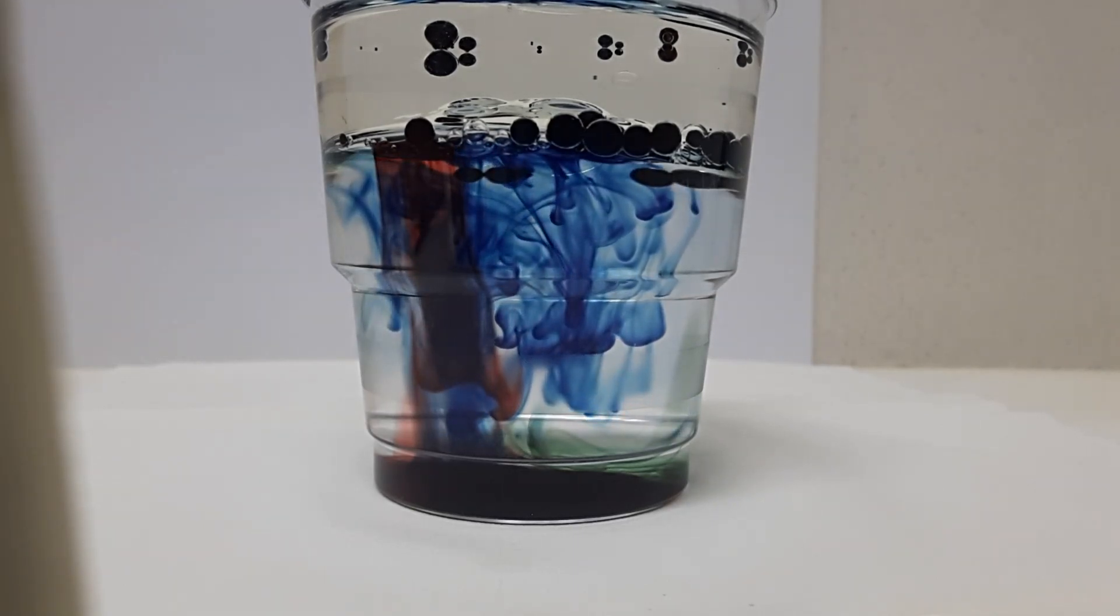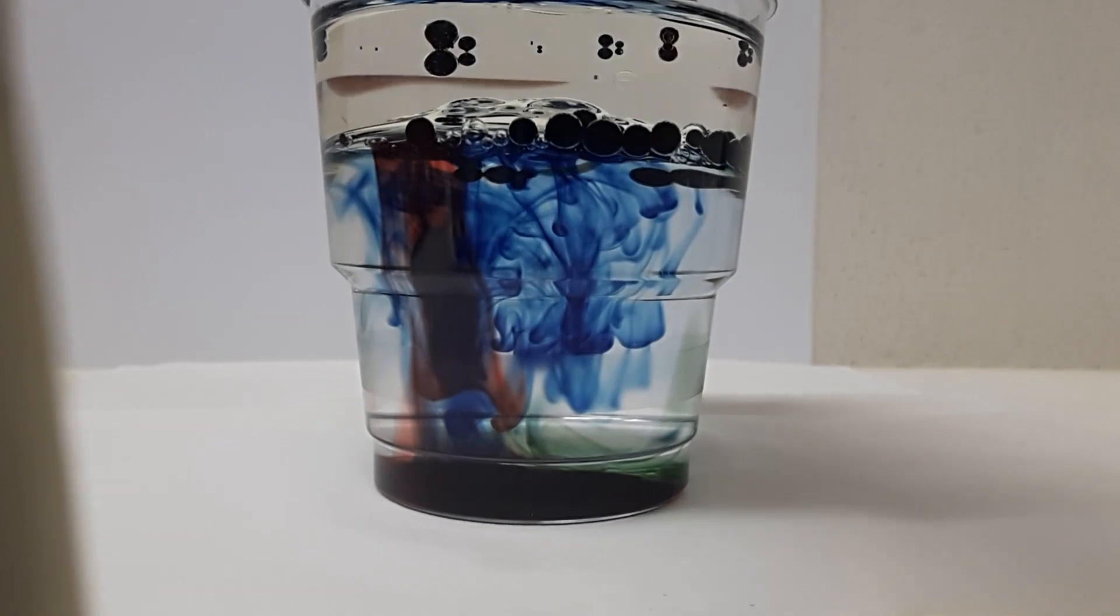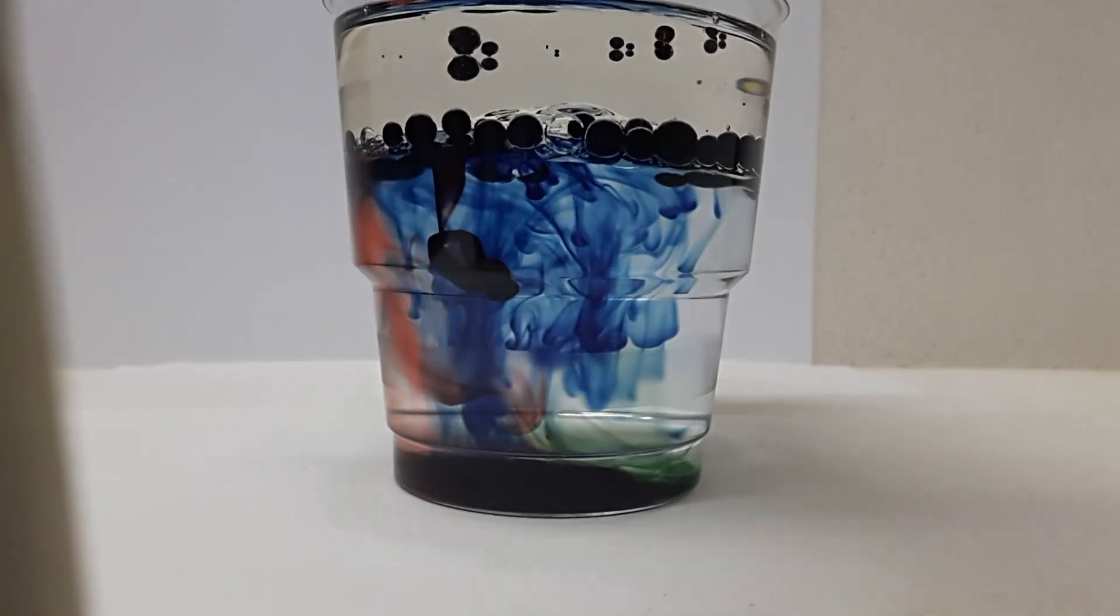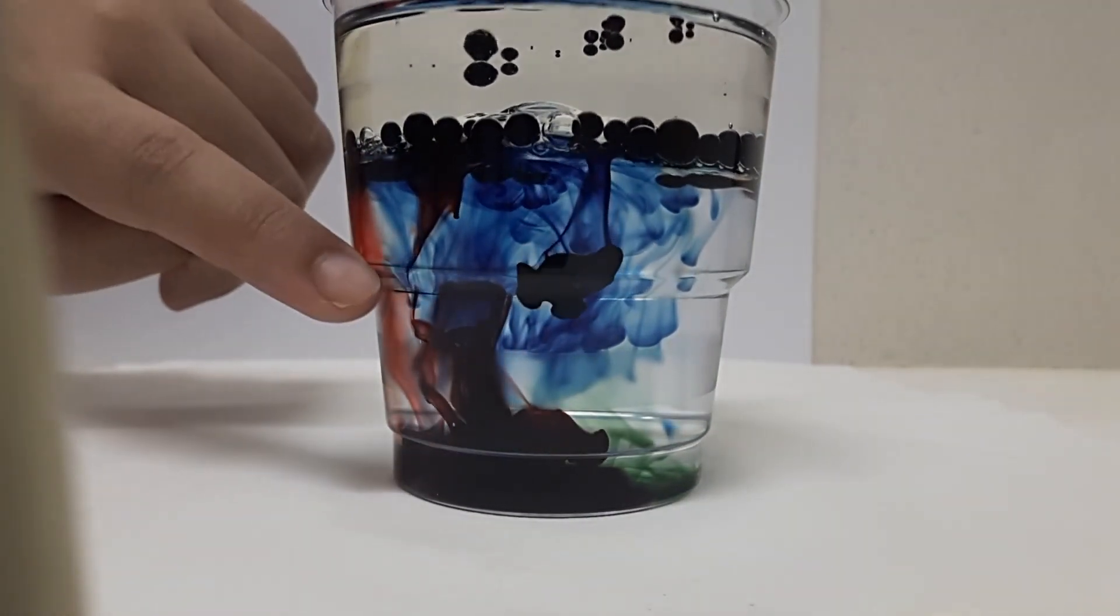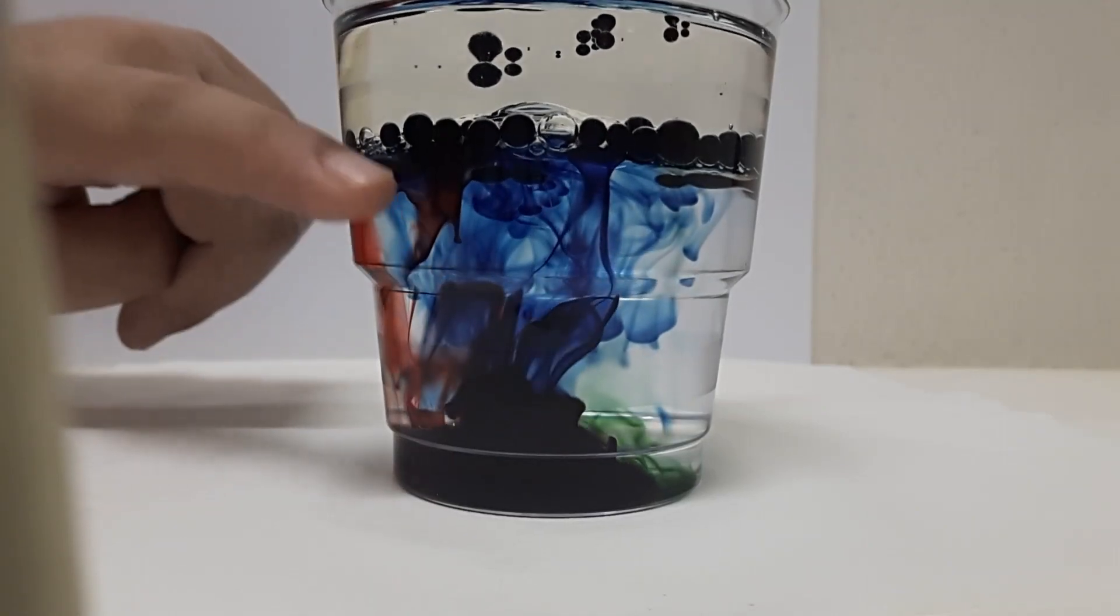So we just want to wait for some time for the food coloring to fall down. Oh, there! The red and blue is now going down from the blob.